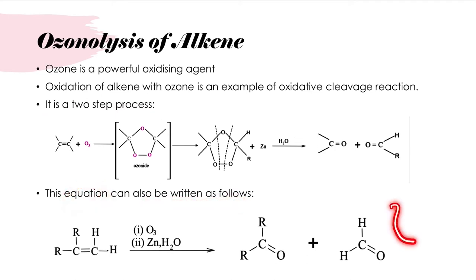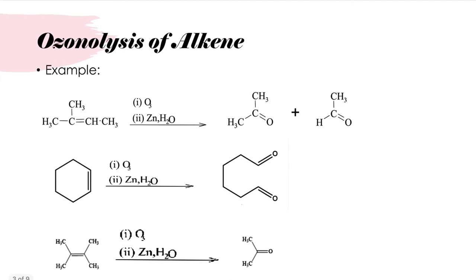Ozonolysis of alkene will produce ketone or aldehyde. Here are a few examples of ozonolysis of alkene that will form ketone or aldehyde.